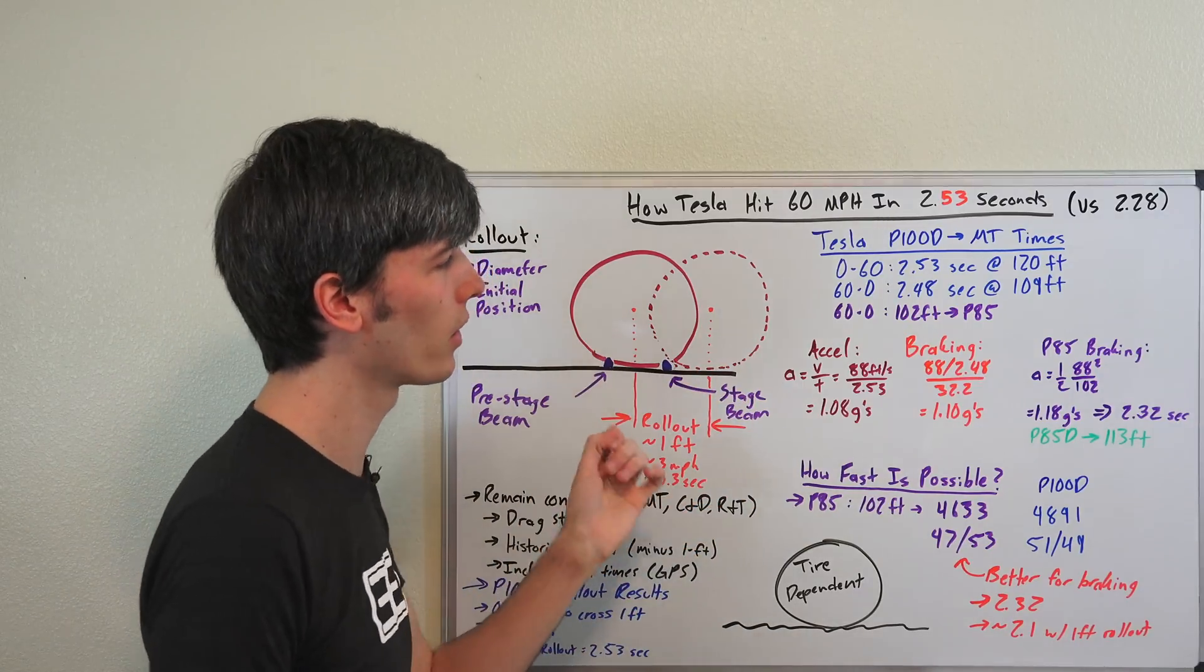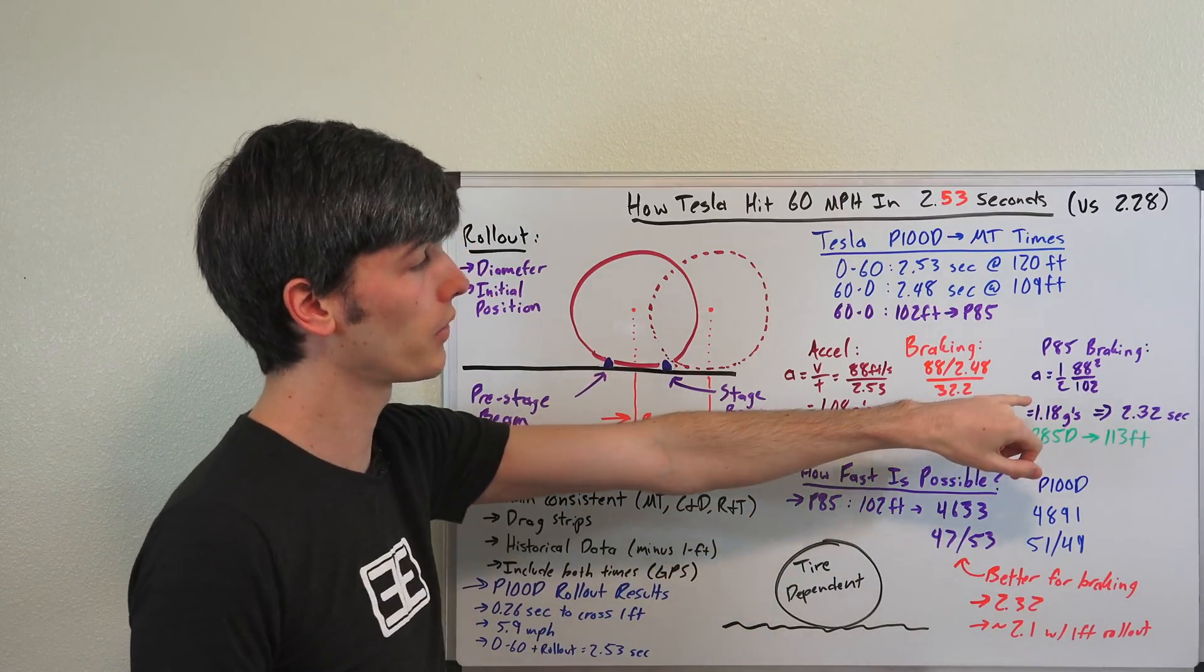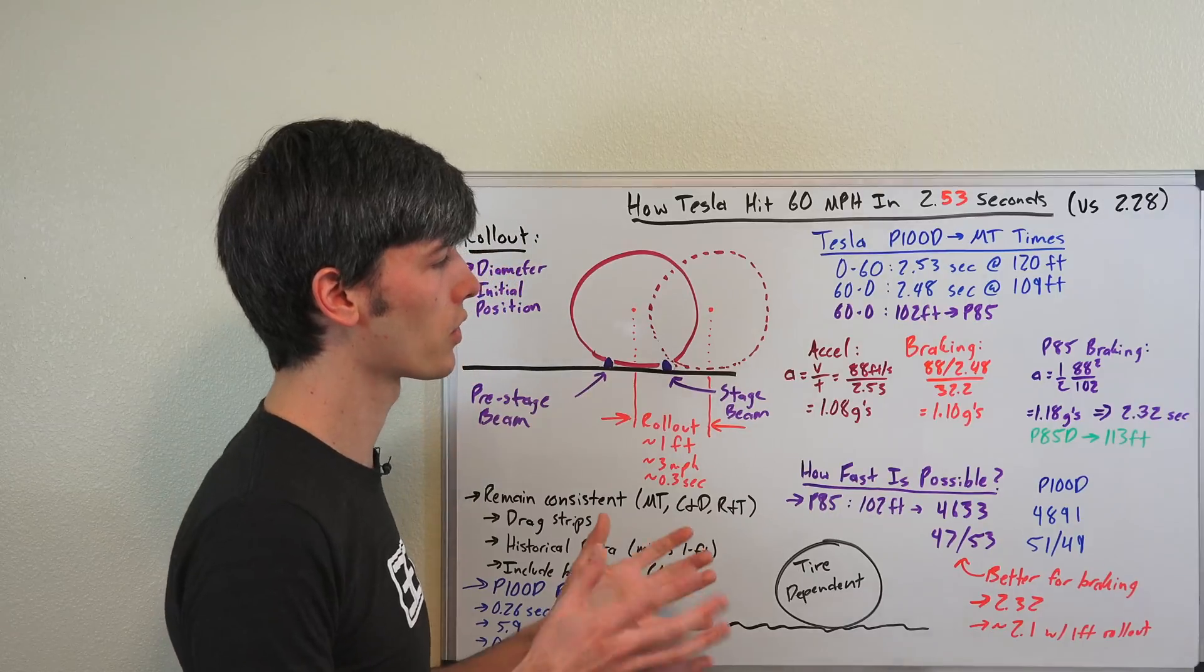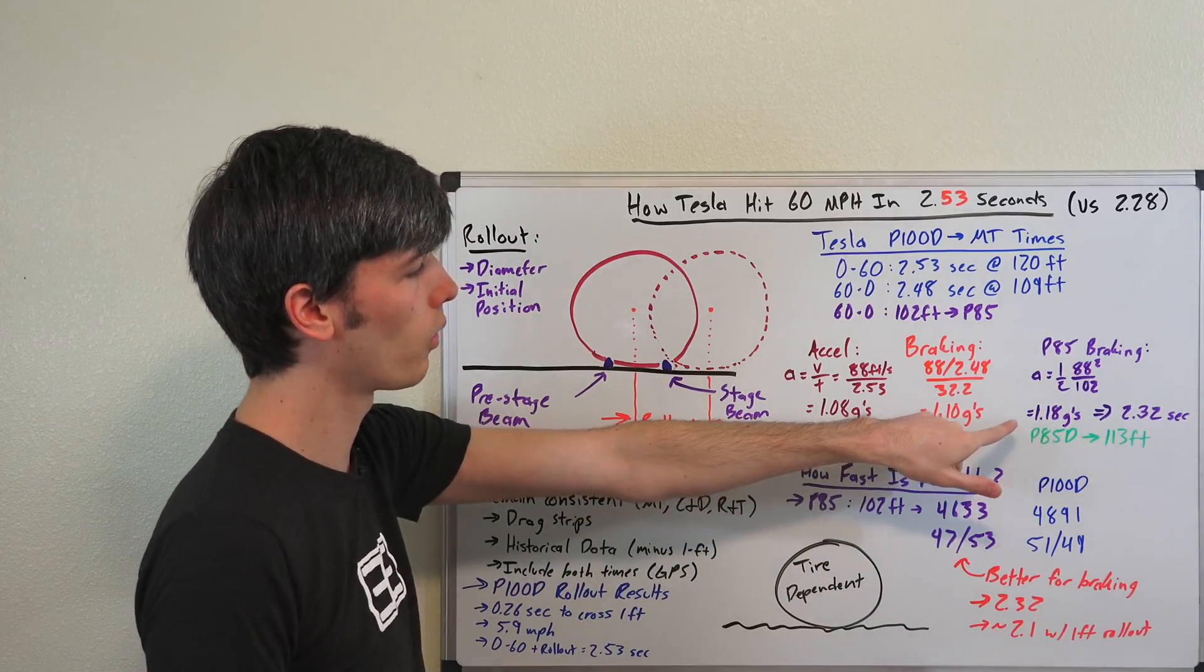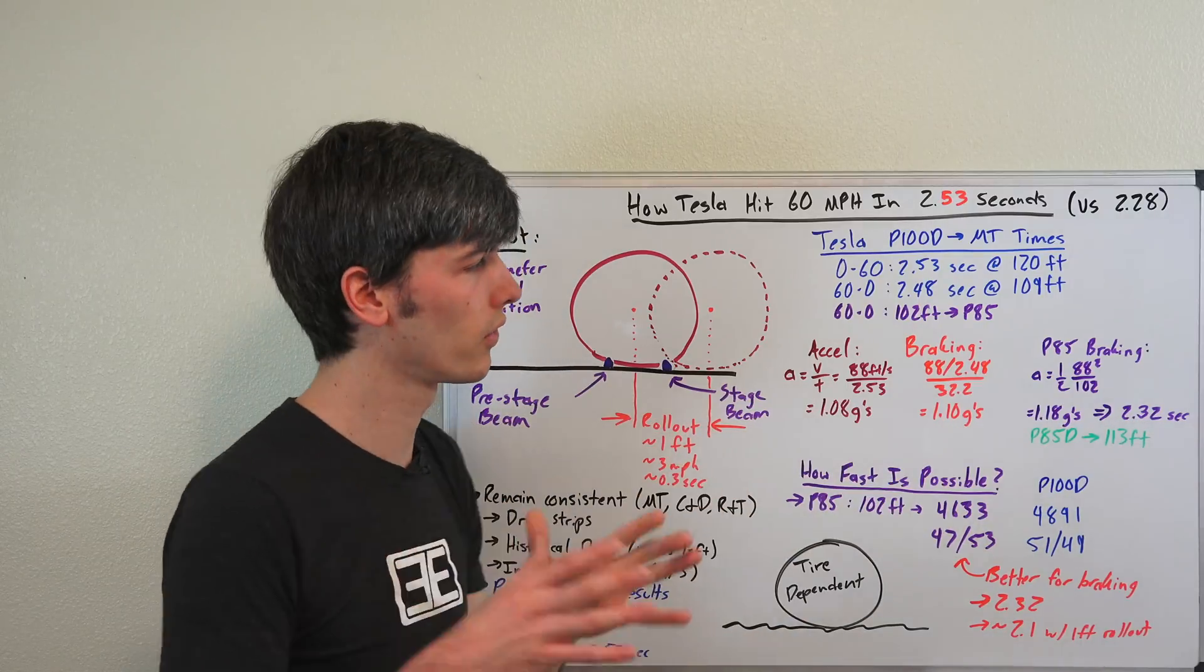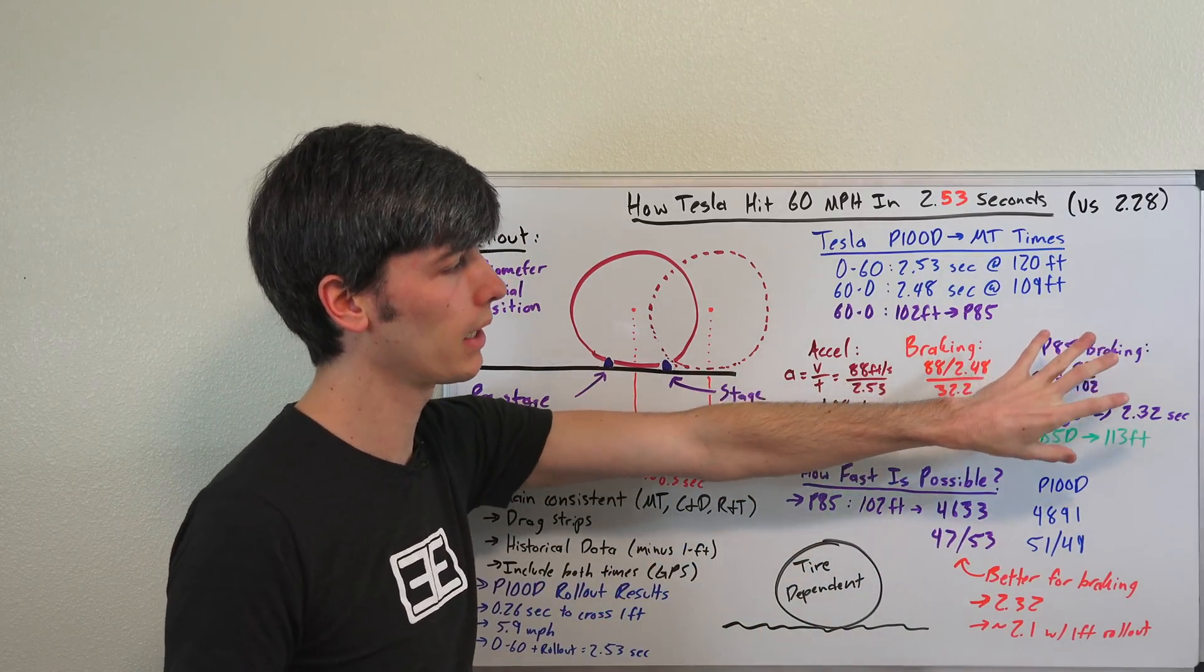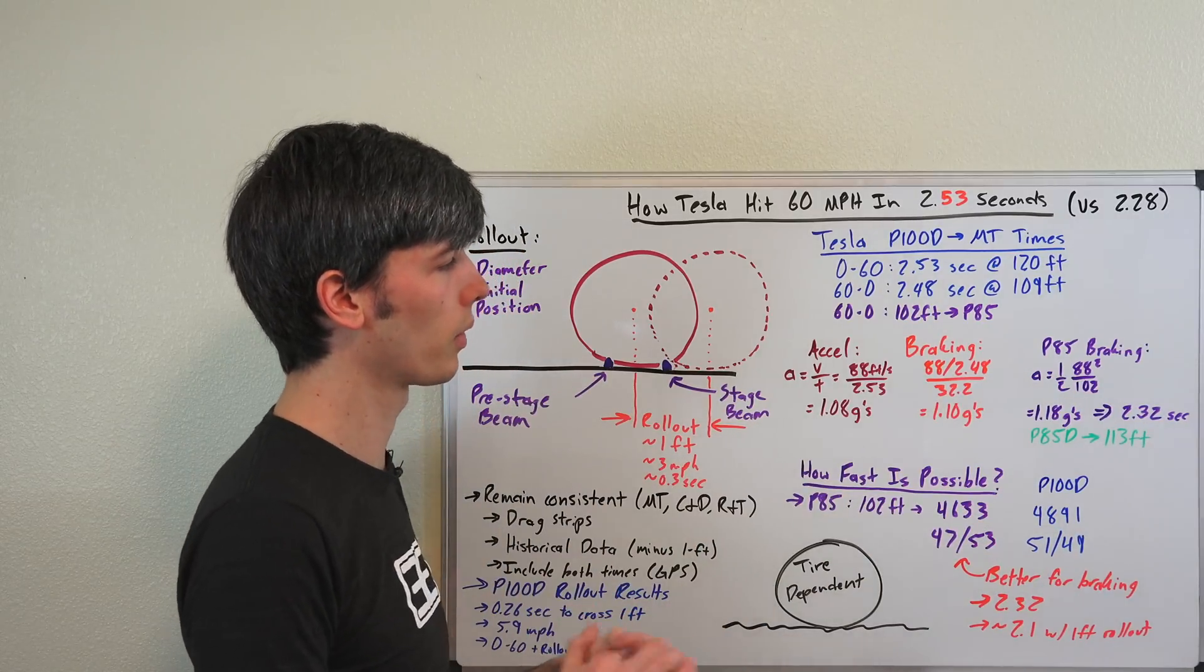Super cool. Now in my other video, I compared it to the P85, not the P85D, just the regular P85, which was able to stop in just 102 feet. And there are some certain reasons for that, but basically that gives it a deceleration of 1.18G, and that's where I came up with my theoretical 0 to 60 limit for the Tesla, based on the grip of this P85 at 2.32 seconds that it would be able to accelerate in.